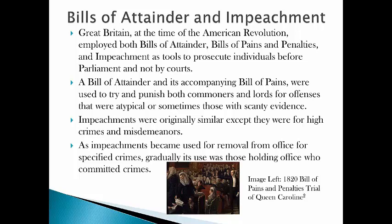Bills of attainder do not necessarily require presentation of evidence or even granting the defendant a hearing. Through the bill, Parliament can even create a new crime and then punish individuals for committing that crime despite no known law being broken at the time. Bills of attainder and their lesser sibling did require royal assent by the king or queen in order for the sentence to be carried out.